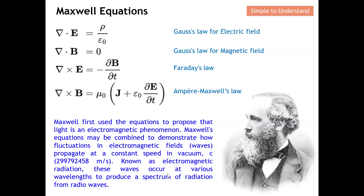Maxwell's equations may be combined to demonstrate how fluctuations in the electromagnetic field propagate at a constant speed in vacuum — approximately 3×10⁸ meters per second — known as electromagnetic radiation. This wave occurs at various wavelengths to produce a spectrum of radiation, from radio waves onward. This is the fundamental background before you can begin discussing microwave engineering.